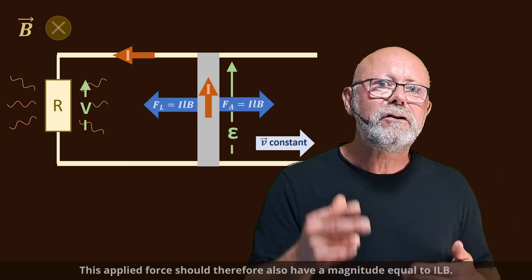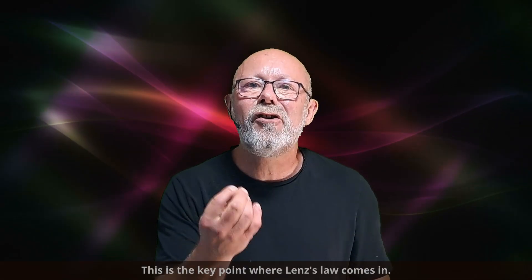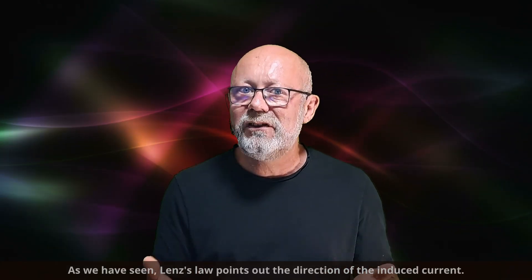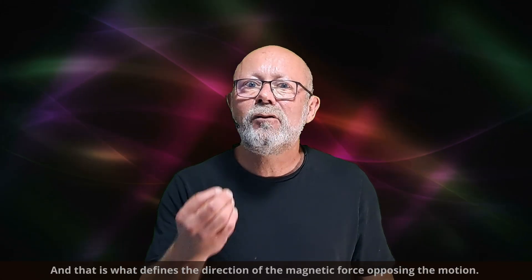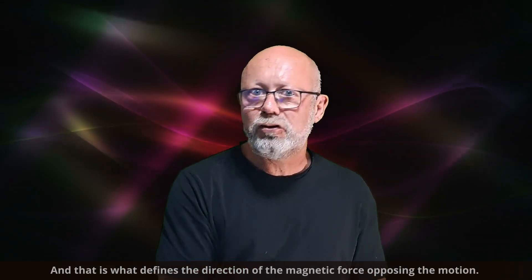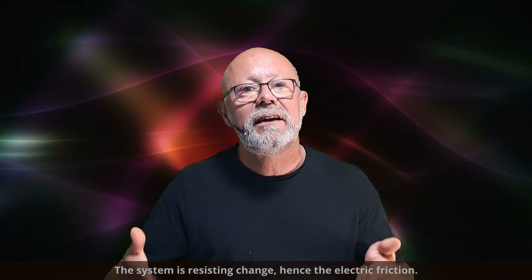The supplied force should therefore also have a magnitude equal to ILB. This is the key point where Lenz's law comes in. As we have seen, Lenz's law points out the direction of the induced current. And that is what defines the direction of the magnetic force opposing the motion. The system is resisting change, hence the electric friction.